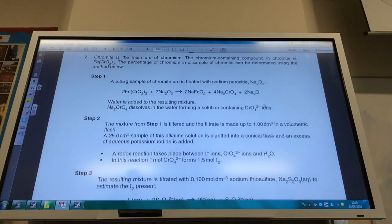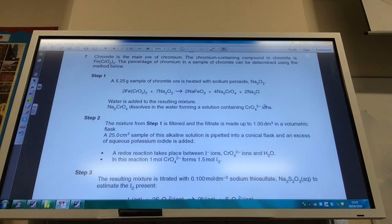So final question always involves a lot of information to get through. So we've got chromium containing compound in chromite is FeCrO2. The percentage of chromium, a sample of chromite can be determined using this method. So we start off with 5.25 grams of a sample.